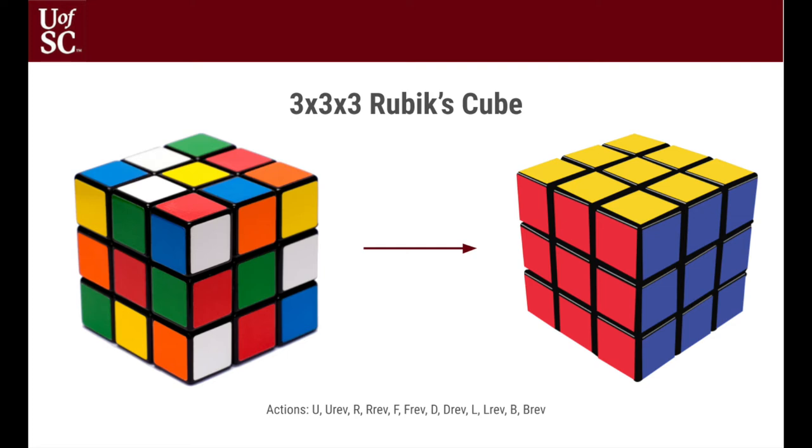Each different cube face is represented by a letter and those letters are used to define the clockwise and counter-clockwise moves for those faces. The faces and their corresponding letter representations are U for the up face, D for the down face, L for the left face, R for the right face, F for the front face, and B for the back face.